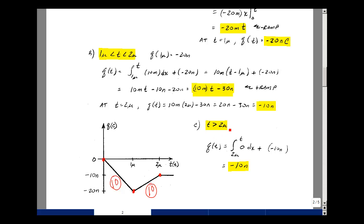And lastly, for t greater than 2 microseconds, the value of current was zero. So the integral of zero is zero. But I do have this initial condition of minus 10 nanocoulombs, so it just continues on here for all time. This part of the problem was worth 5 points. Again, right or wrong. And this is problem number 1 on exam 1.